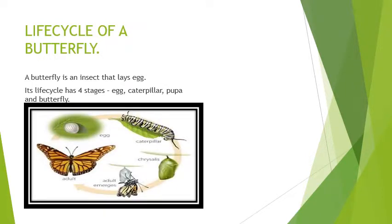So in the diagram also we can see first egg is there. Then caterpillar will come. Then caterpillar comes into adult emerges from it. And after that adult butterfly grows up. So this is a life cycle of a butterfly.